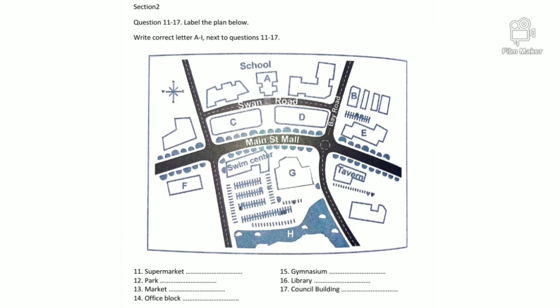The school is a major user of the pool, so to make it safer for students to cross Swan Road, a pedestrian crossing will be installed in front of the school gymnasium. There's a planned gap in the trees on the Main Street Mall so that students will be able to walk across straight to the pool. Another pedestrian crossing to the west of the pool will give students and other users safer access to the new library.